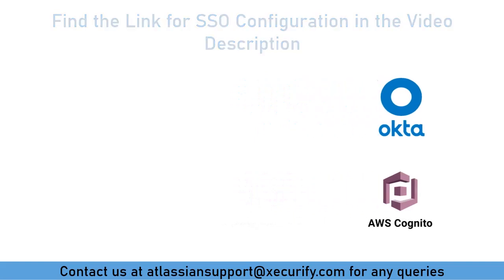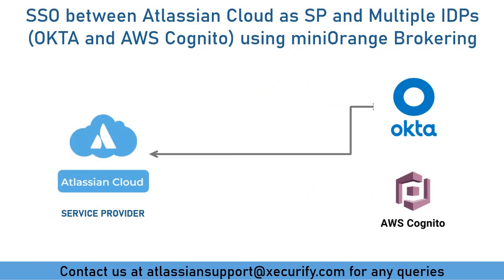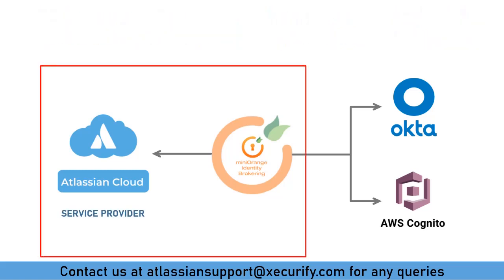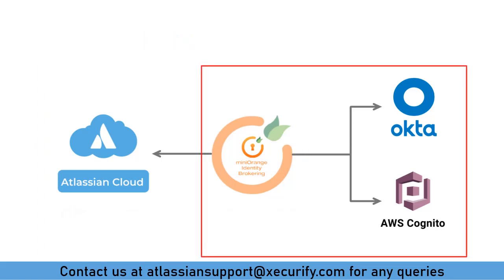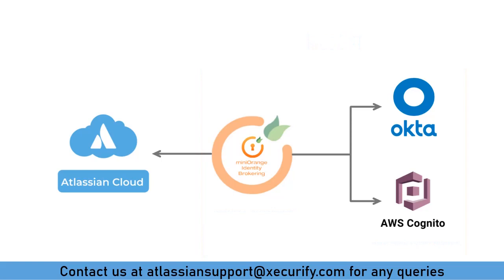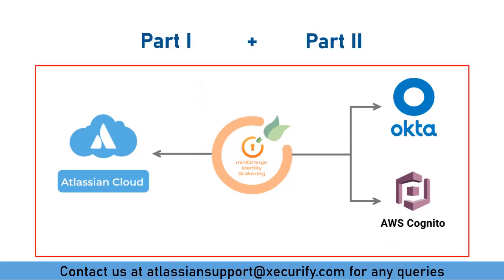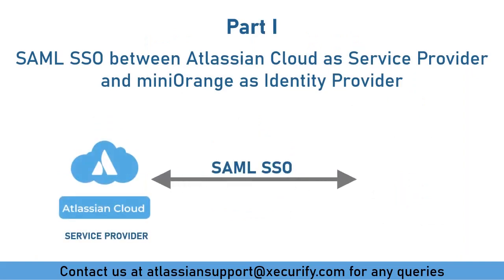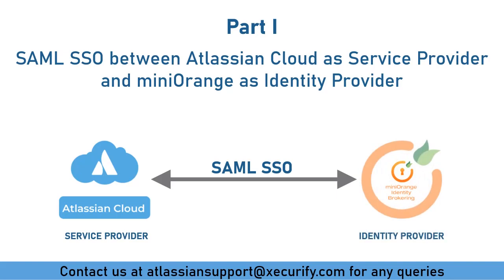You will find the video link in the description to set up Atlassian Cloud as service provider with Okta that supports SAML, and AWS Cognito that supports OAuth protocol, using Minirange brokering service. In that video, you will find SSO configurations in two parts: SSO between Atlassian Cloud as service provider and Minirange as identity provider in part 1, and SSO between Minirange as service provider and Okta and AWS Cognito as identity providers in part 2, finally combining both parts. Check out the video link in the description for this configuration.